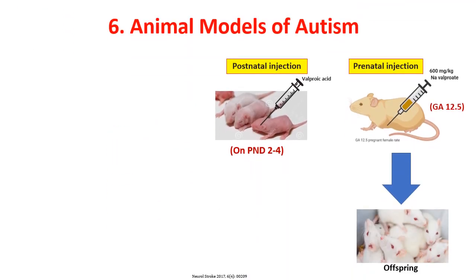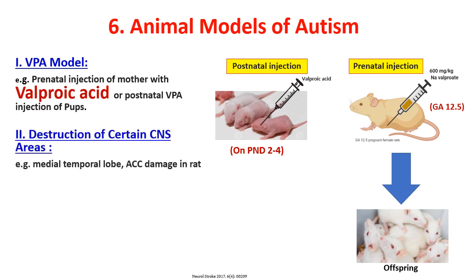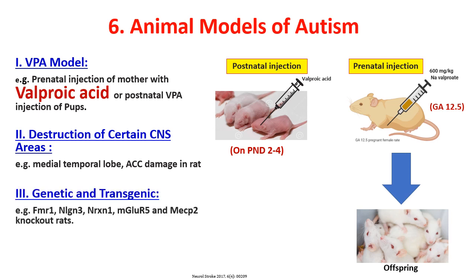The sixth CNS model is autism. First, the VPA model using valproic acid — either prenatal injection to the mother or postnatal injection to pups. We published two papers in our department: one comparing and validating the two models, and another on drug effects. The second method is destruction of certain CNS areas like the medial temporal lobe or anterior cerebral cortex. Third are genetic and transgenic models. Fourth, viral models such as Borna disease virus-infected rats are also used as autism models.